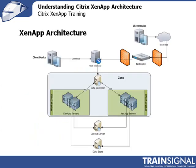From an architectural standpoint, a client device connecting from outside the network goes through the internet, through the firewall, then through the NetScaler, access gateway, or secure gateway in the DMZ, talks to the web interface server, which then contacts the zone's data collector to determine the least busy server for the requested application. Servers inside the zone are grouped into worker groups based on application type. All XenApp servers communicate with the license server and database server. Users connecting from the LAN or WAN bypass the DMZ and go directly to the web interface.